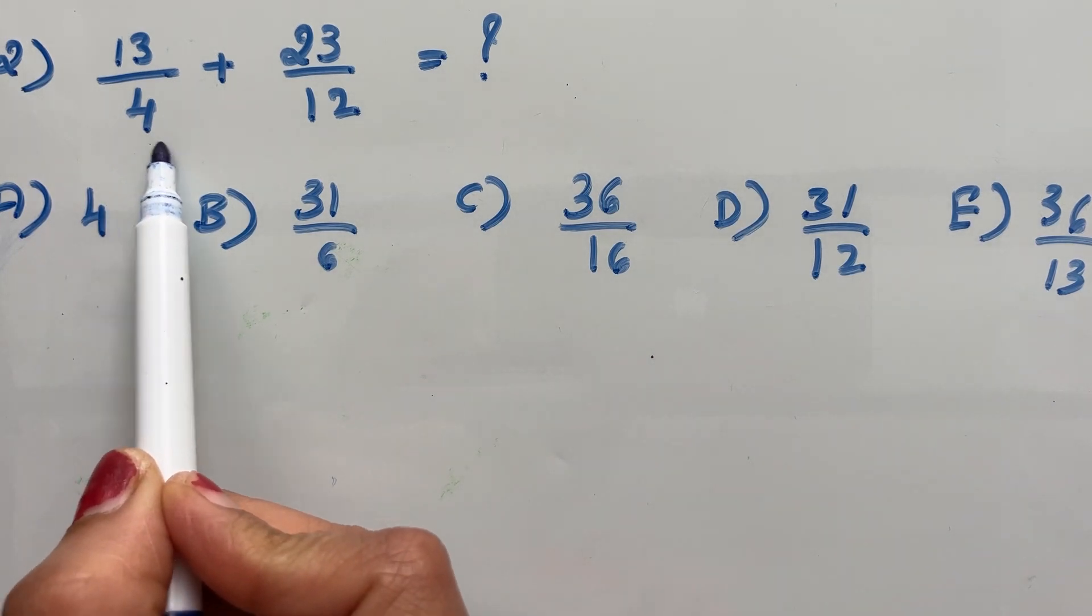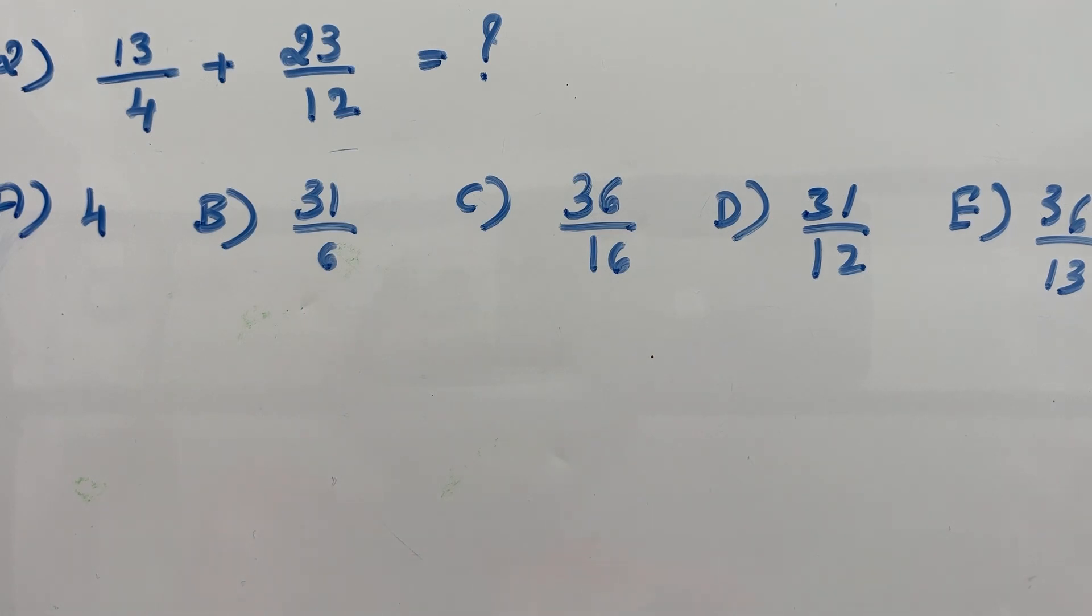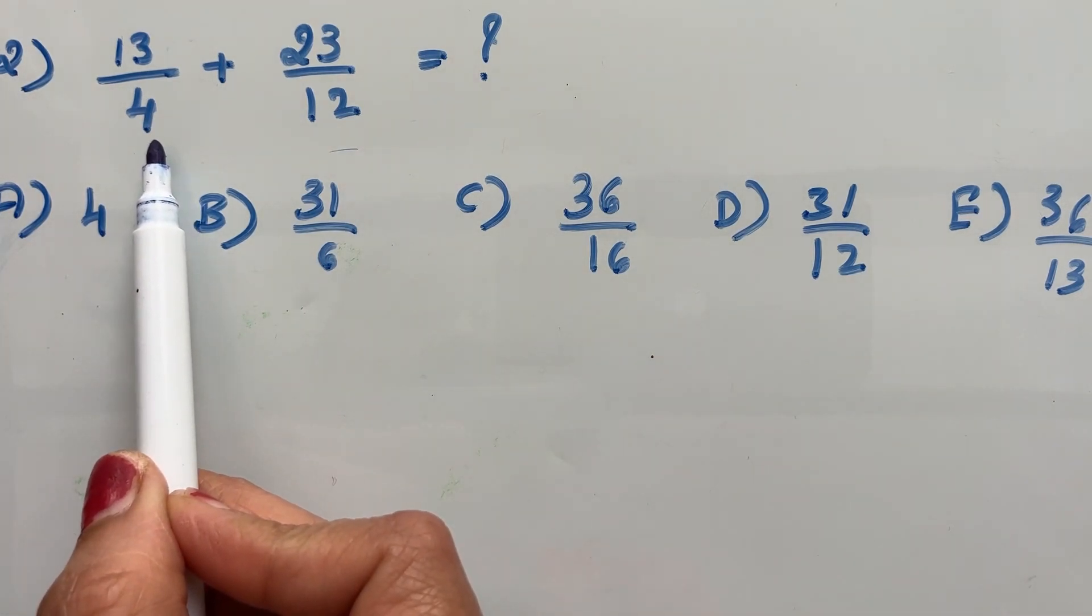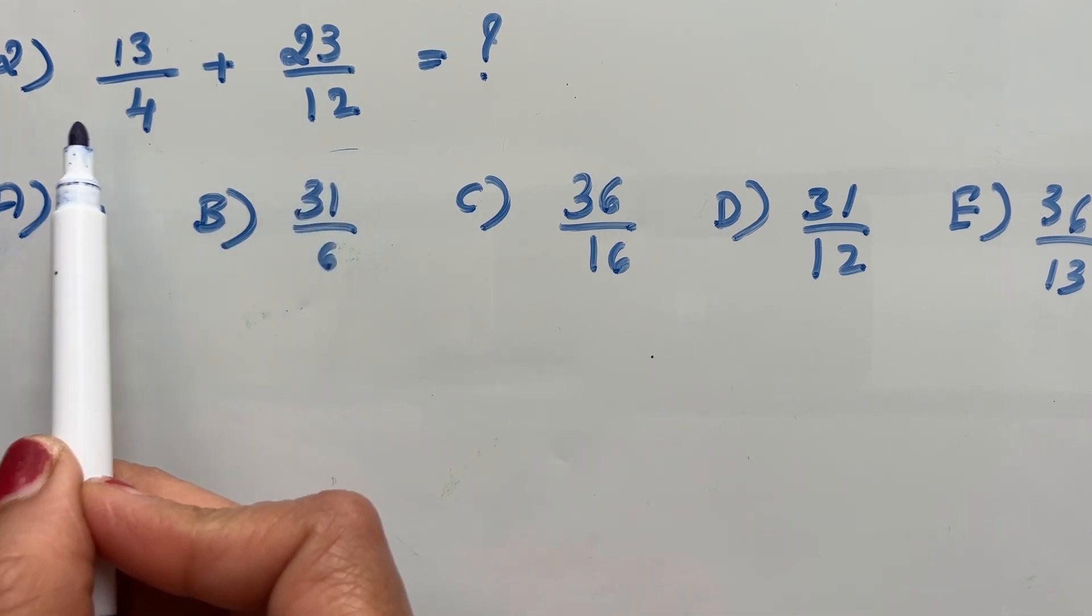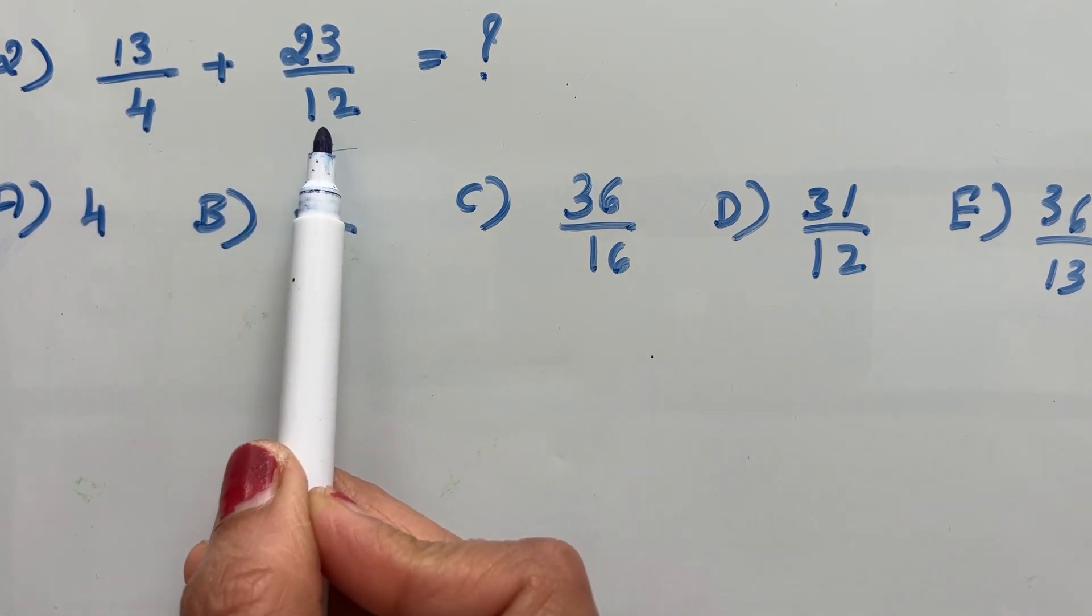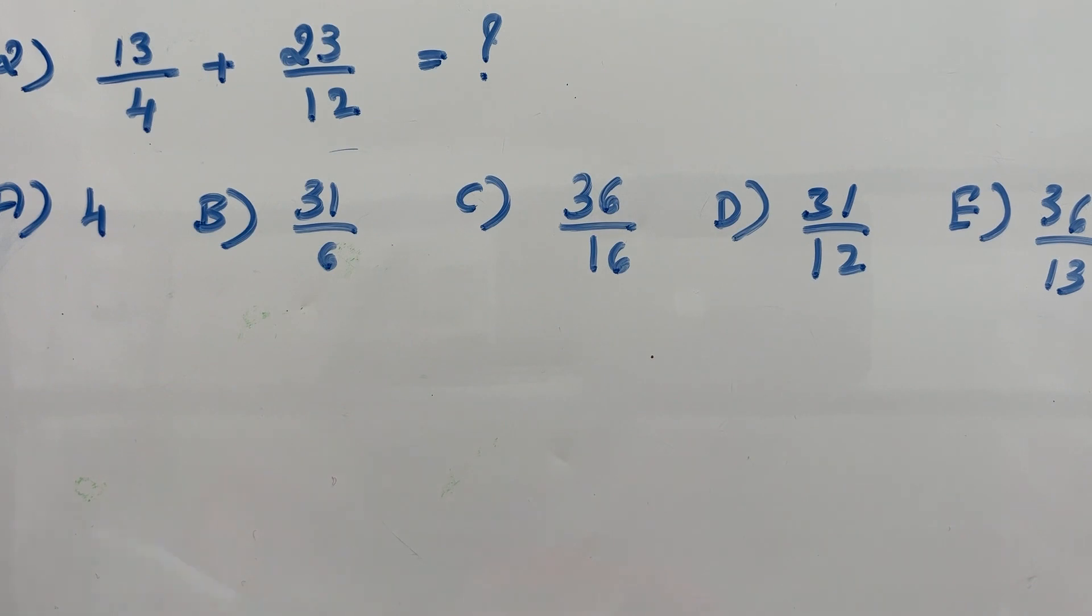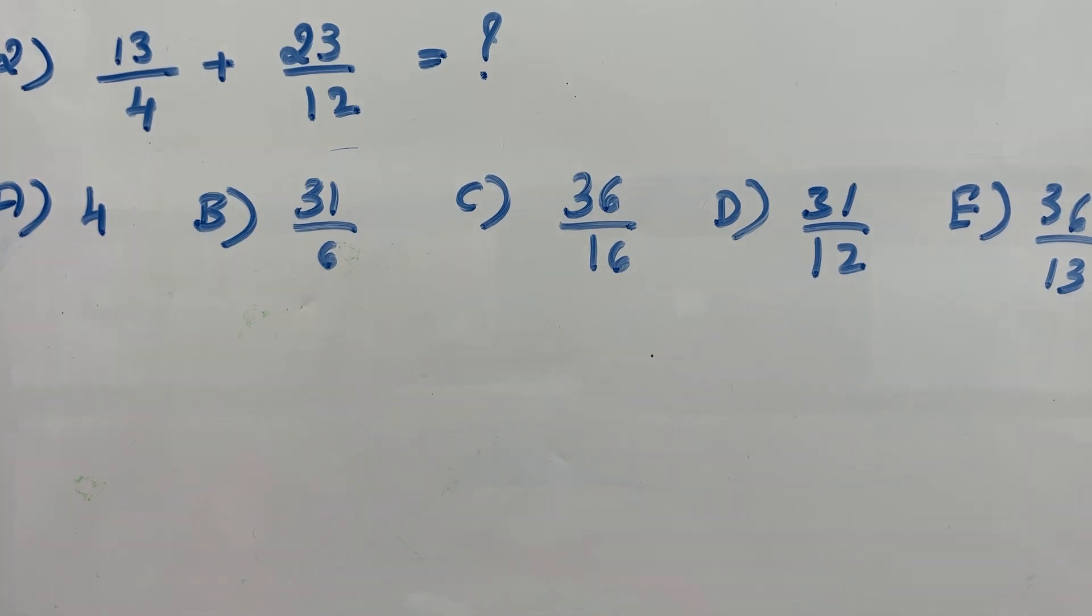You can see the denominators 4 and 12. These are unlike fractions because the denominators are different. So you have to find the LCM of 4 and 12. The LCM of 4 and 12 is 12.